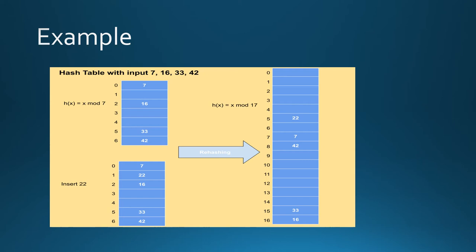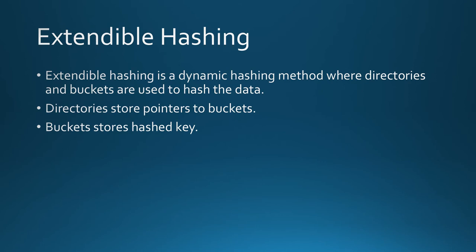So this is about rehashing. Next is extendable hashing. It is a dynamic hashing method where directories and buckets are used to hash the data. Directories store pointers to buckets and buckets hold the hashed keys.